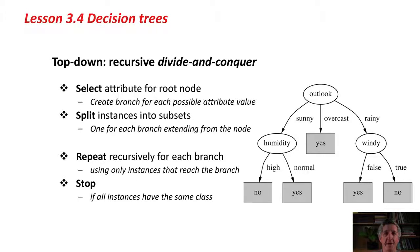That splits the instances into subsets, one for each branch that extends from the root node, and then you repeat the procedure recursively for each branch, selecting an attribute at each node, and of course you use only instances that reach that branch to make the selection. Then, at the end, you stop. Perhaps you might continue until all instances have the same class.